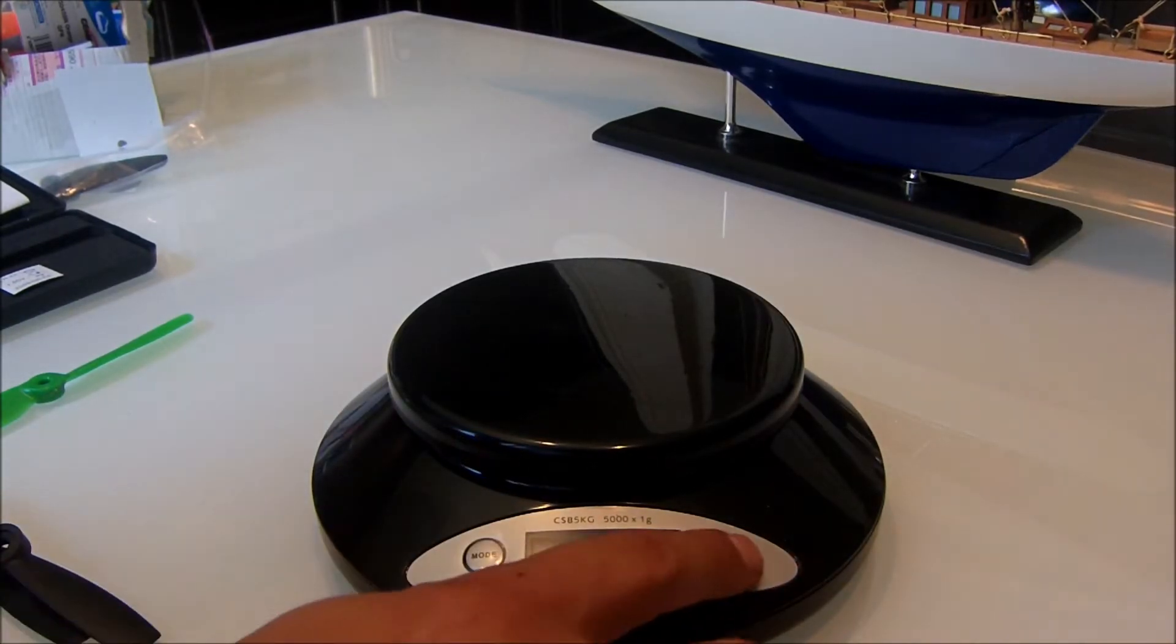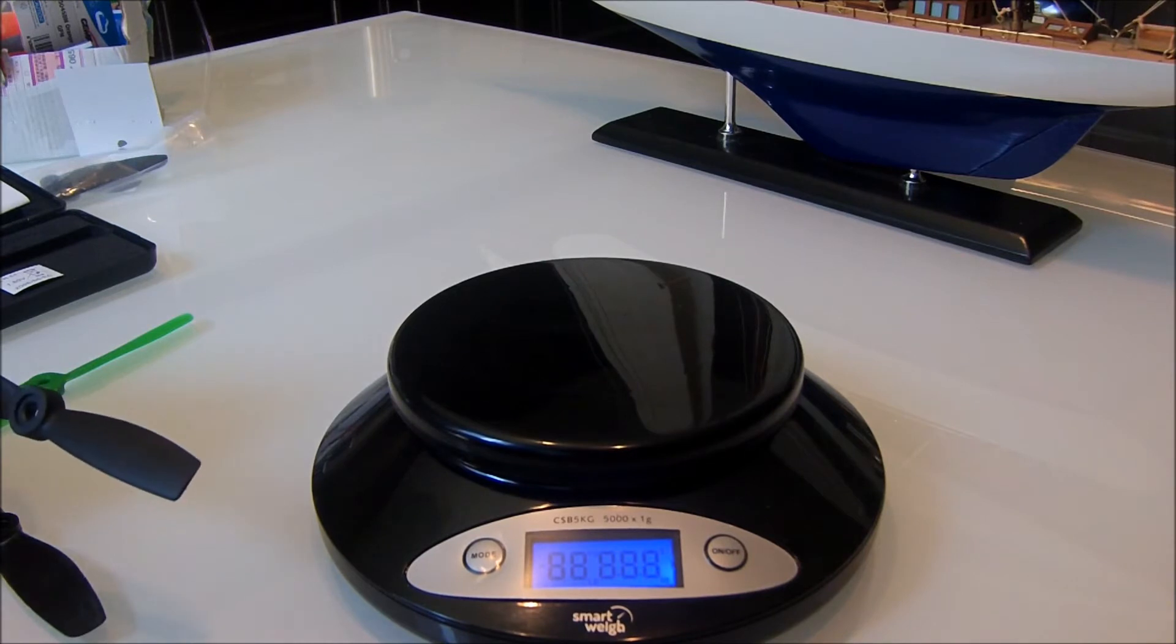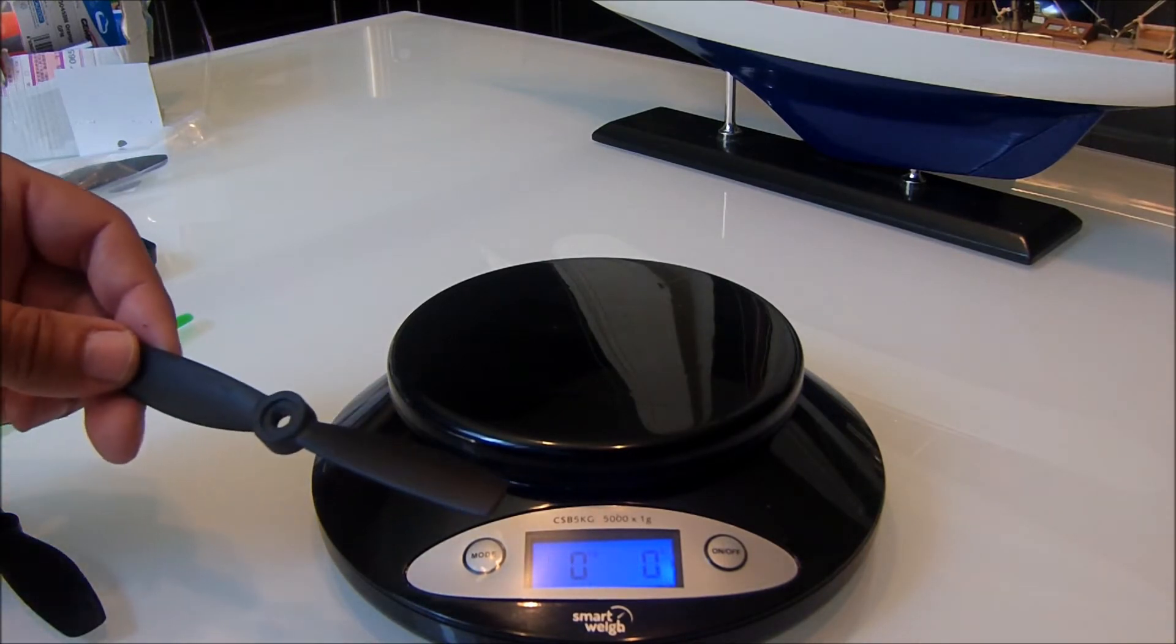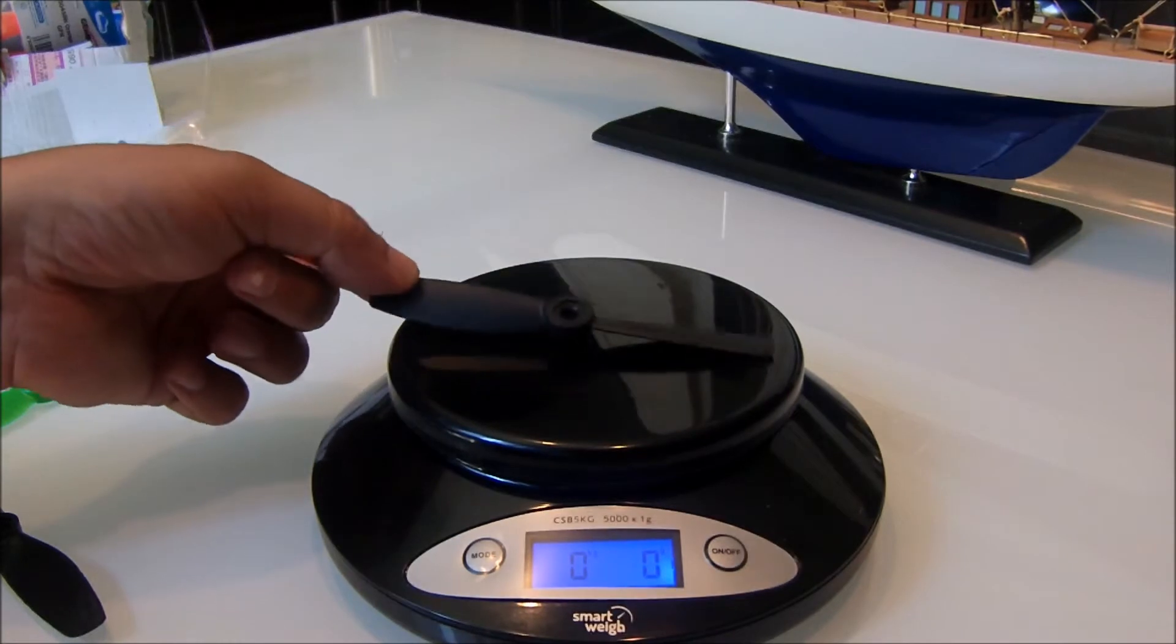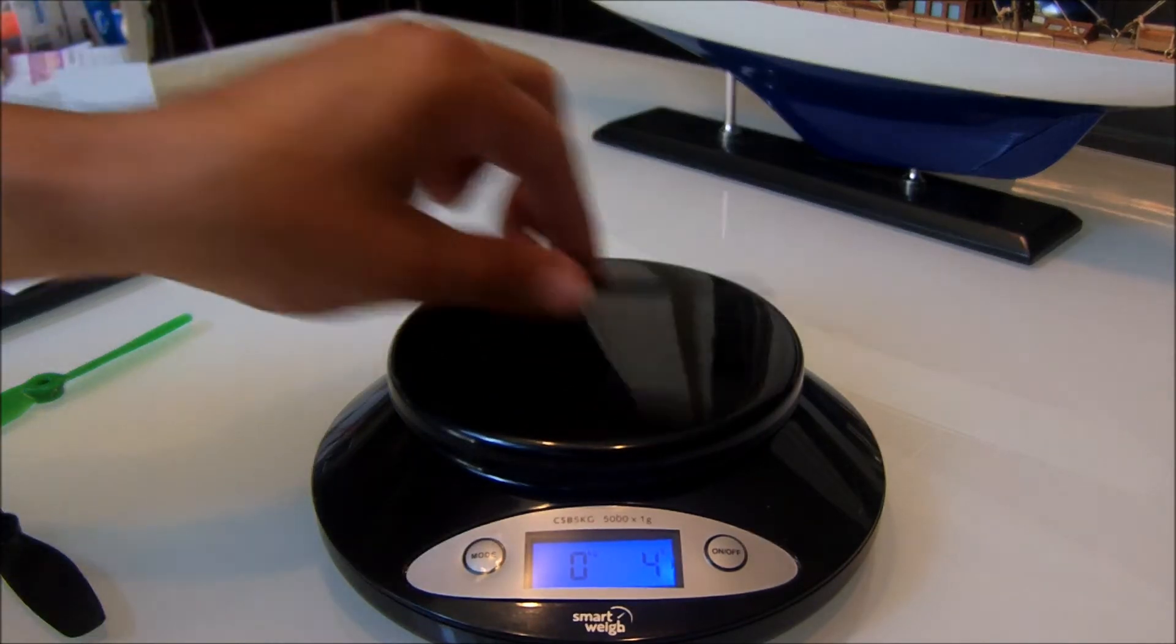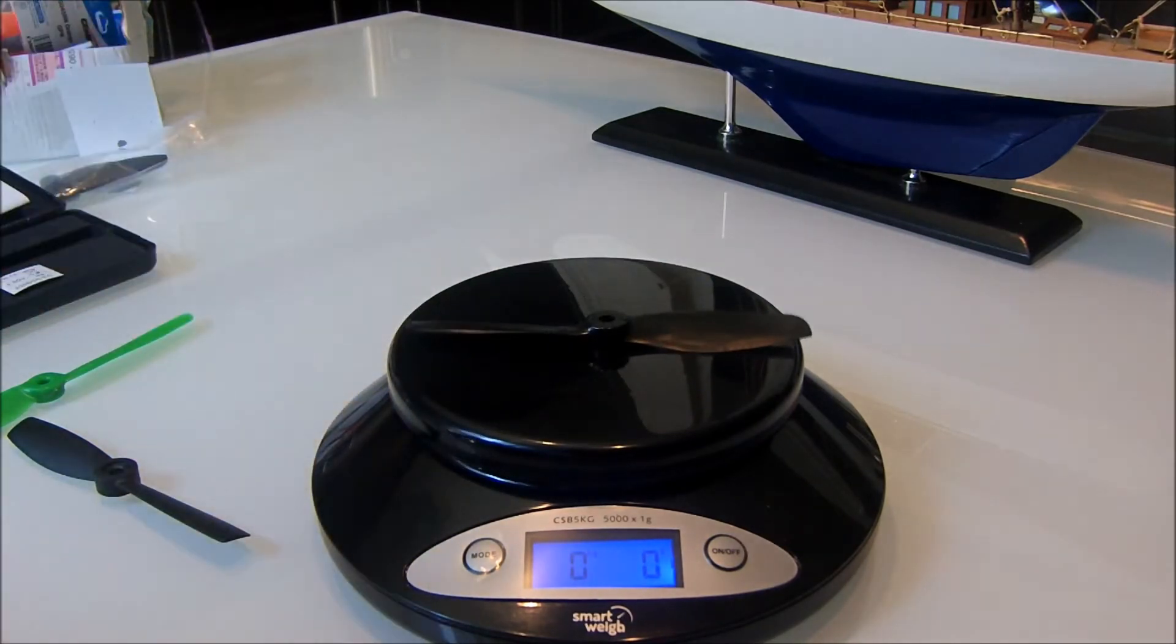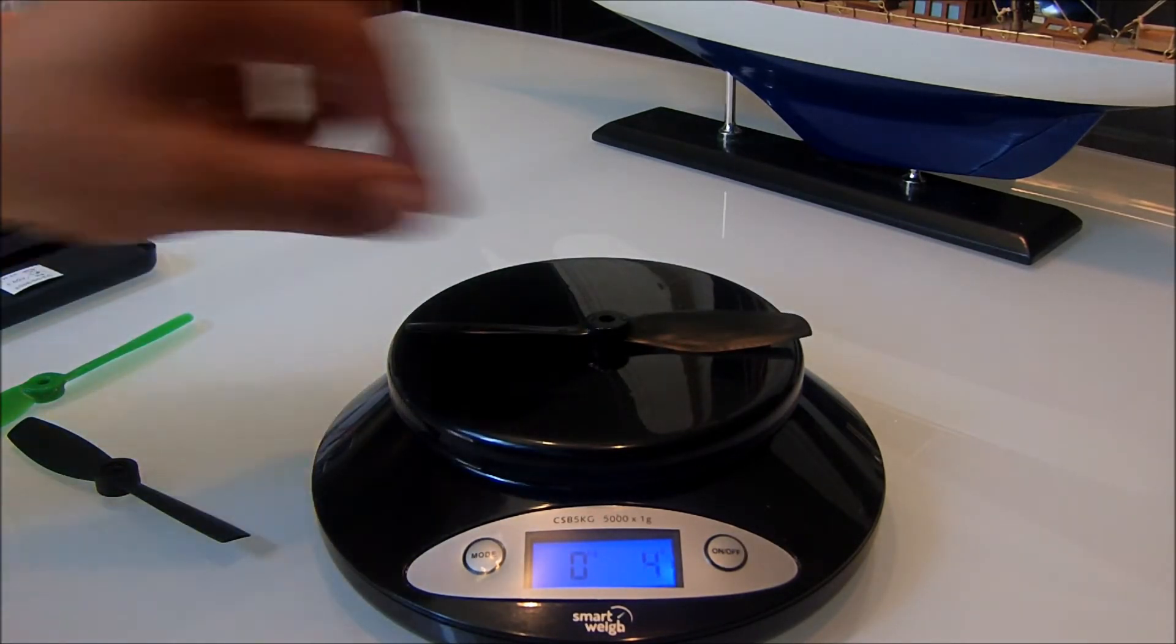Alright, so now we're going to do a weight test. Now that we're zeroed, HQ prop first. The HQ prop bullnose 50-45 weighs 4 grams. The Gemfan 50-45 bullnose also weighs 4 grams.